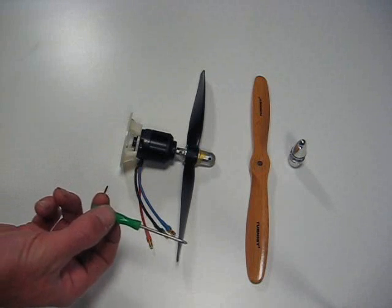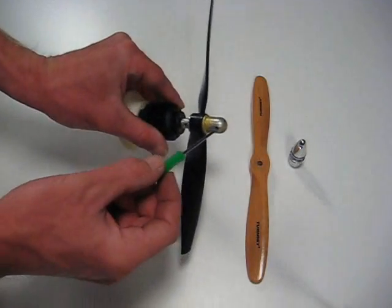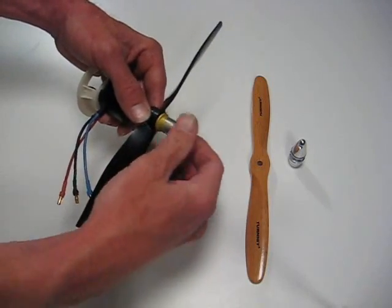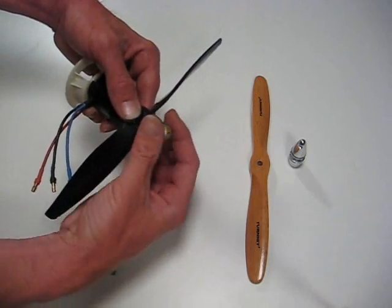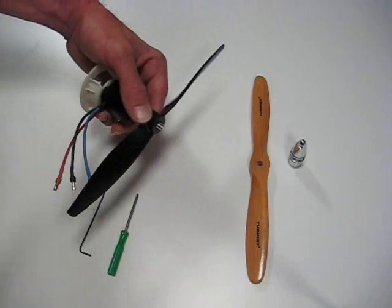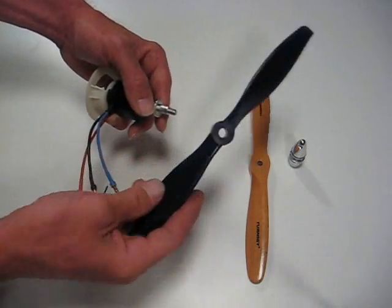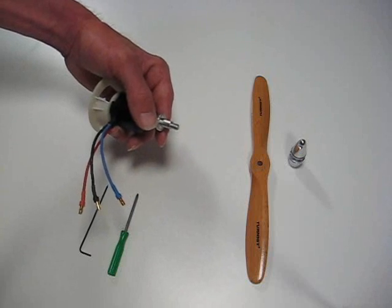I have a screwdriver here, but just about anything will work that you can insert into the spinner cap. Go ahead and loosen that up. Remove the spinner cap. I'm going to set that aside. Remove this T28 plastic prop and set it aside.